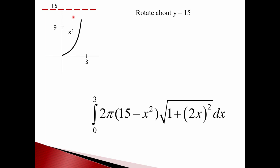So 2 pi times 15 minus x squared times the length of the peel along the curve. That's the arc length part. That's the square root of one plus the derivative squared times my dx. In this case, the square root of one plus 2x all squared dx.